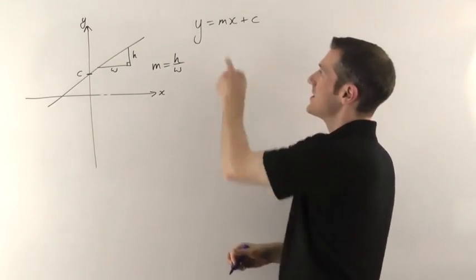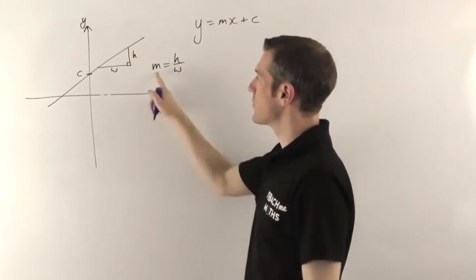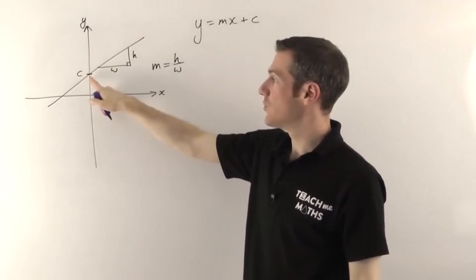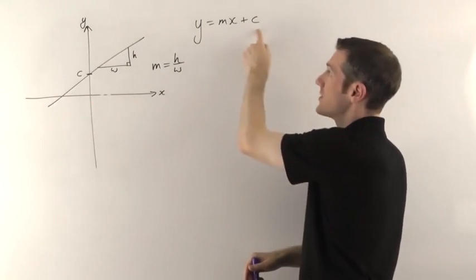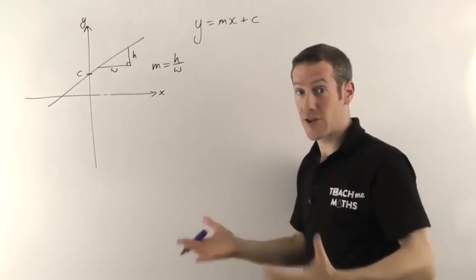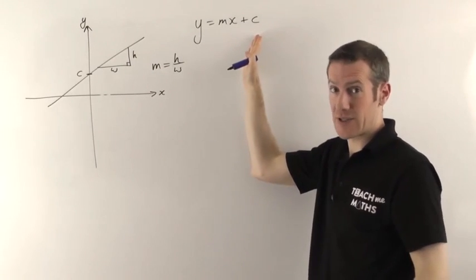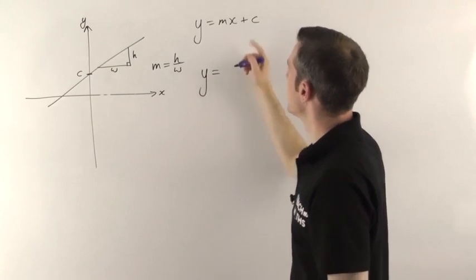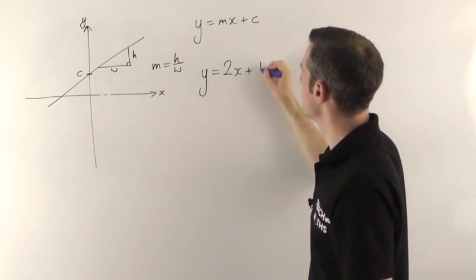So the short answer here is if you want the equation for a straight line, you work out the gradient by drawing the right angle triangle, height divided by width. You look to see where it crosses the y-axis—that's the y-intercept. When you know the gradient and y-intercept, you can write down the equation because every straight line always has the form y equals mx plus c. So if the gradient turned out to be 2 and the y-intercept was 1, then the equation would be 2x plus 1.